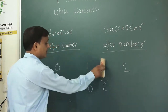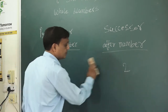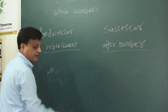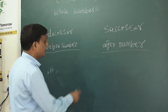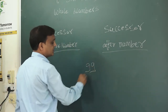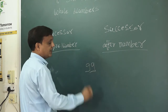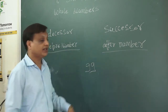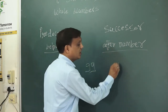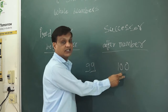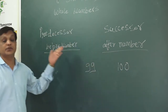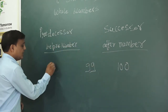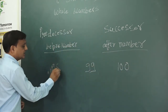Now we will take some examples with greater numbers. We will take the example of 99. What is the successor of 99? If you add 1 to 99, the answer is 100. So 100 is the successor. What is the predecessor of 99? So 98 is the predecessor.